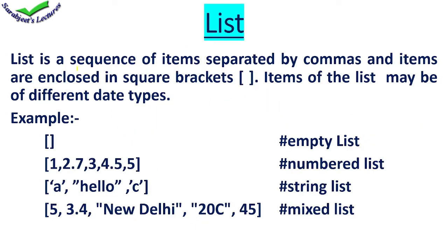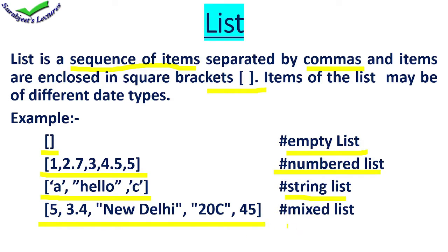Next is list. A list is a sequence of items, and we use commas to separate items. You will always use square brackets for a list. If you leave the square brackets empty, that is an empty list. If you store numbers in your list, it can be integer or decimal numbers — that is called a numbered list. If you store all types of values including strings and numbers, then that particular list is known as a mixed list. You will always use square brackets for a list.